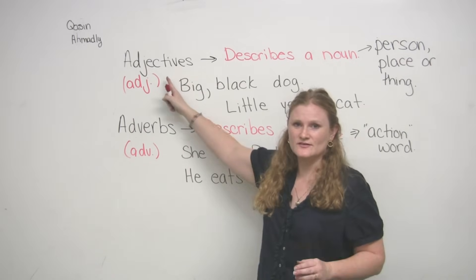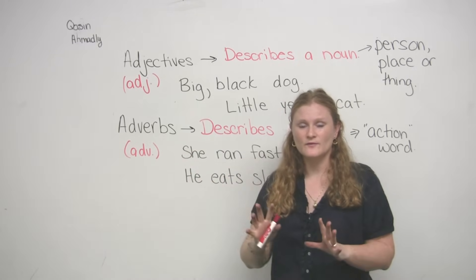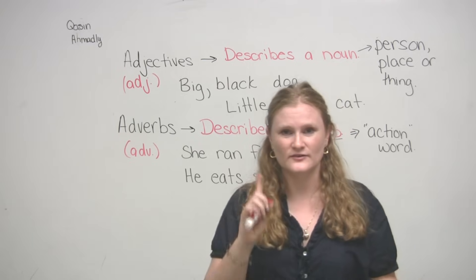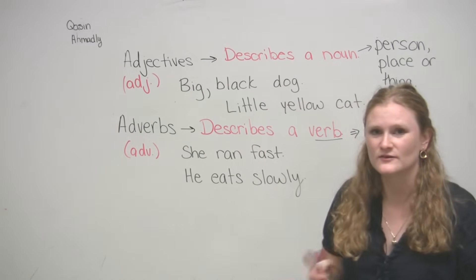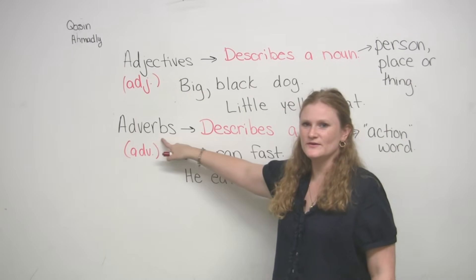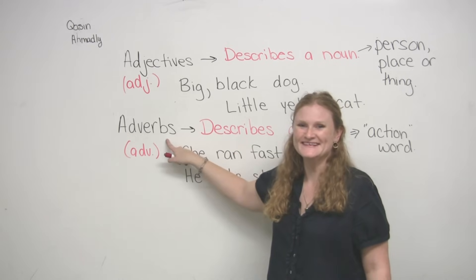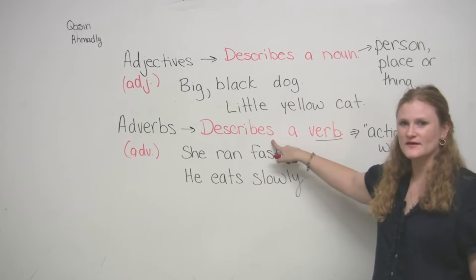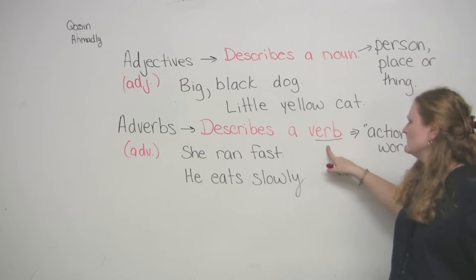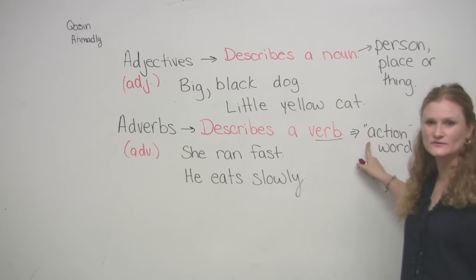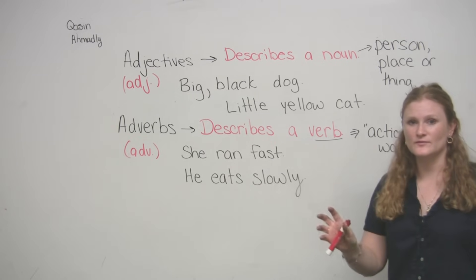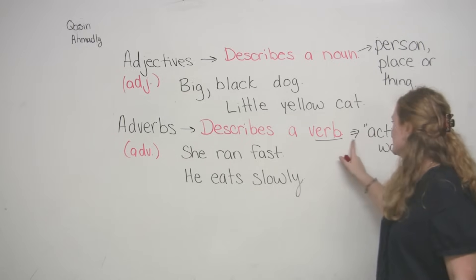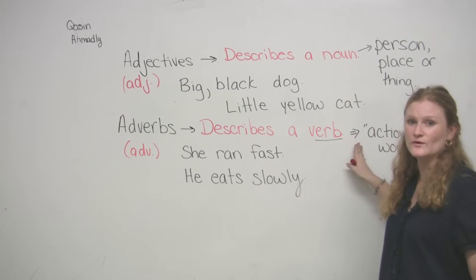Qasim wanted to know the differences between adjectives and adverbs. I remember being confused about this in school too. One of my teachers taught me a very easy way to figure it out: the word 'adverb' contains the word 'verb,' so you can always remember that an adverb describes a verb. A verb is an action word most of the time. There are verbs called stative verbs that aren't action words, but don't worry about those right now. We're going to look at simple, basic action verbs.